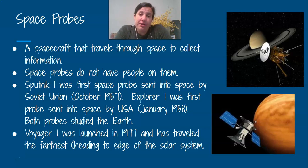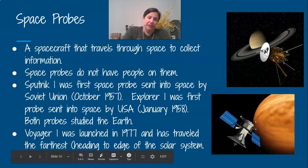Voyager 1 is a very famous space probe as well because it was launched in 1977, and it is the farthest traveling space probe. It has been past Saturn and Jupiter and it's heading towards the edge of our solar system. So it's way out there, sending back data.